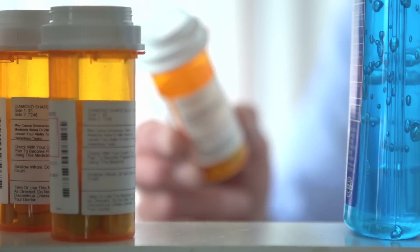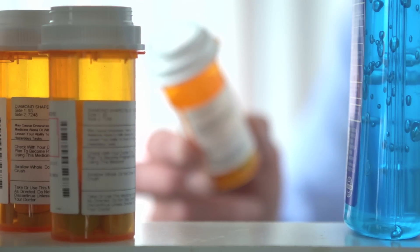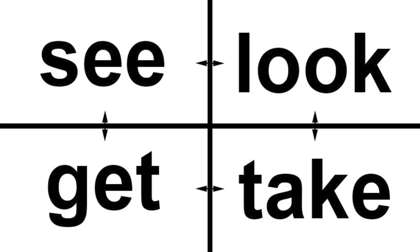When we see something, we're talking about that moment. And when we get something, we're talking about right at that moment when we receive it. It doesn't matter how we see something, but we see it — we're talking about right at that moment, as opposed to watching something, which is more of a process. So if you want to talk about receiving something but describing the process — like moving it from one place to another — this is 'take'. The answer to our little puzzle is 'take'.